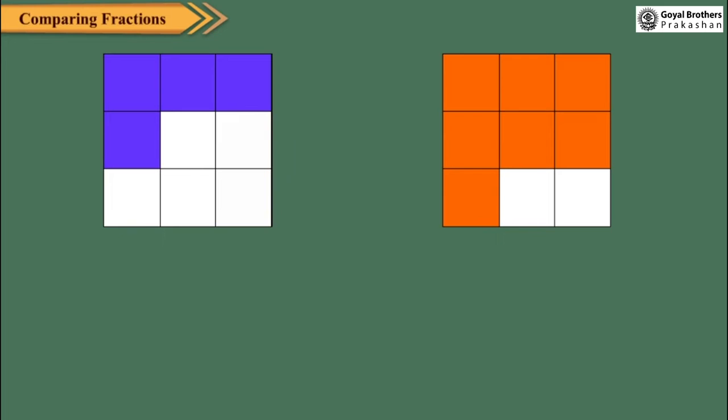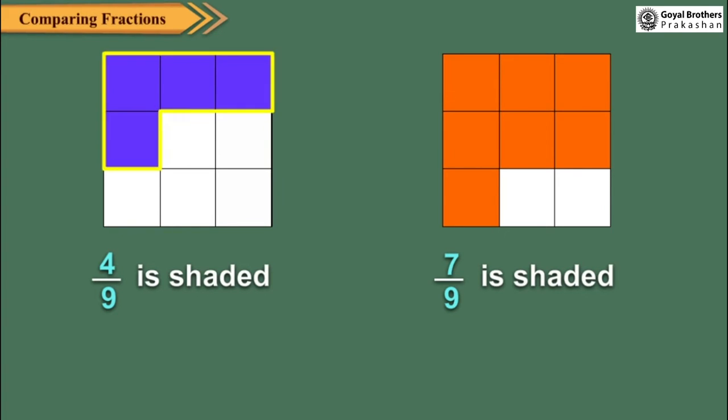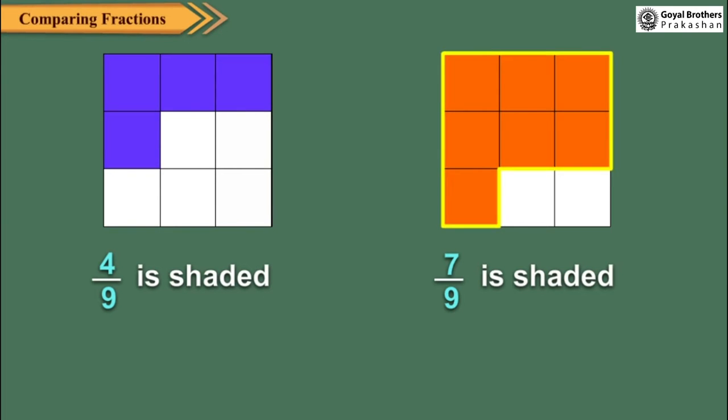Observe these figures. In the first figure, 4 by 9 part is shaded. And in the second figure, 7 by 9 part is shaded. Clearly, the shaded part in first figure is smaller than that in the second figure.